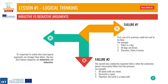The second way a deductive argument fails is when the conclusion doesn't necessarily follow from the premises. For example: 1. All tennis balls are round. 2. The earth is round. 3. Therefore, the earth is a tennis ball. This argument fails because of faulty logic. Yes, all tennis balls are round, but so are lots of other things. In symbolic terms, this argument follows the form: all A's are B, C is B, therefore C is an A. Since this is an invalid form, the argument is automatically invalid too.